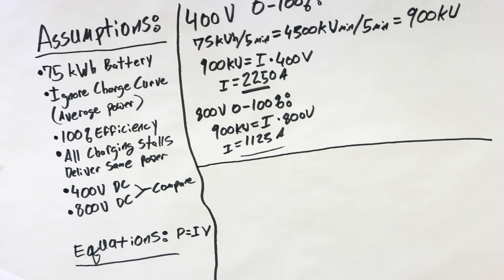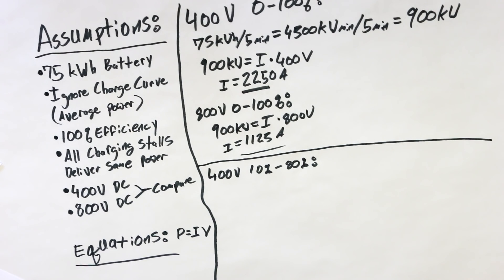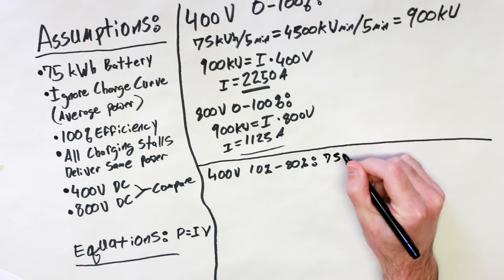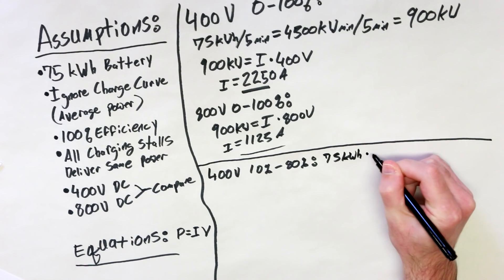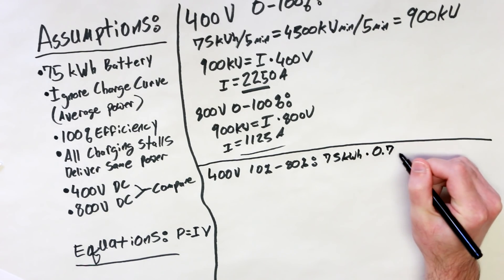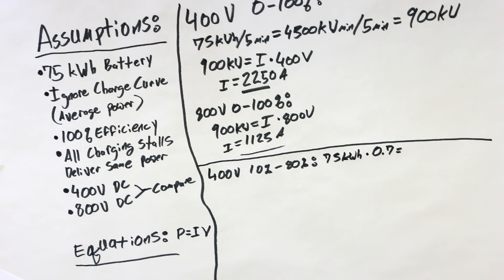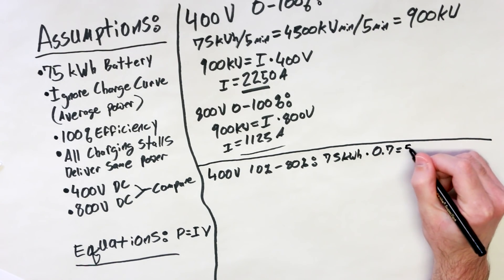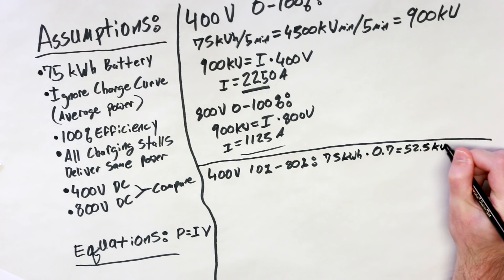Now, a more realistic scenario for long distance travel would be arriving at a charging station at, say, a 10% state of charge, and then needing to charge up to 80% to make it to the next charging station. So, let's see what this looks like if we're going from 10% to 80%. Again, we're talking average power, so we're ignoring charge curve. Charging from 10% to 80% is basically applying a 70% state of charge boost. So, we're going to start by taking 75 kilowatt hours and multiplying that by 0.7 to give us the amount of power in kilowatt hours we're going to need to deliver in five minutes. So, in this case, 75 times 0.7 gives us 52.5 kilowatt hours.